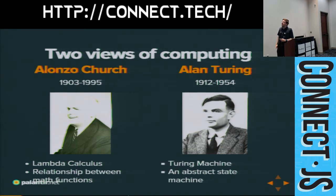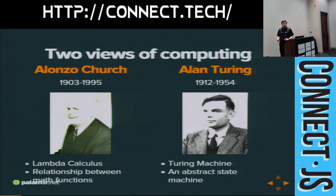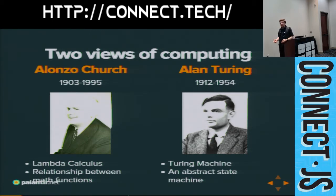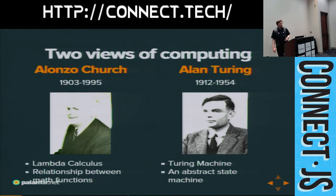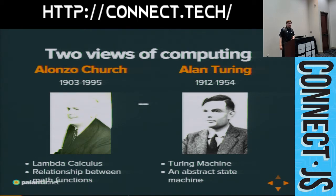Meanwhile, another mathematician over in England named Alan Turing came up with another definition of computation, which he called a Turing machine — because he is somewhat more egotistical than Alonzo Church was. It defines computation as a state machine: a series of instructions that are changing a list of information. You have some list of information, you've got instructions that are changing that over time — and that's a Turing machine. They published papers on these very close together, one after the other, and like good scientists do, looked at each other's work and said, this looks familiar.